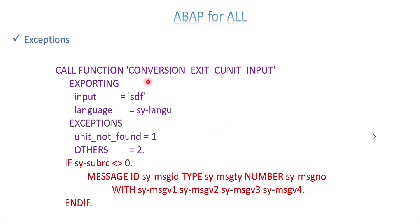If you use a function module and it raises an exception — for example, unit not found in a unit of measure conversion — and the input is coming dynamically and that unit is not available in your production system, then that exception is raised. You have to make sure you capture the exception. This is one way to capture it. The second step is how you project it to the user — maybe a message, a write statement, or an email. But make sure it is captured properly. Even if you keep the IF block without anything inside, that is also considered as the exception being captured in the code.